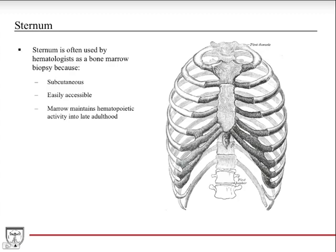Since the sternum can be palpated and is just under the skin, it's used by hematologists for a bone marrow biopsy. It's subcutaneous and easily accessible, right in the center, right under the surface — you don't have to stick the needle in deep. The bone marrow within the sternum maintains hematopoietic activity into late adulthood, so it's an easy-to-access bone that will provide a good sample, since not all bones active during childhood for hematopoiesis remain active in adulthood.